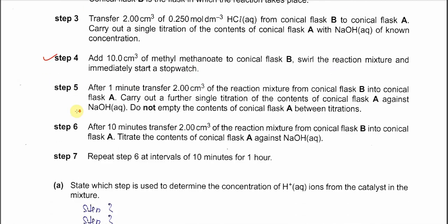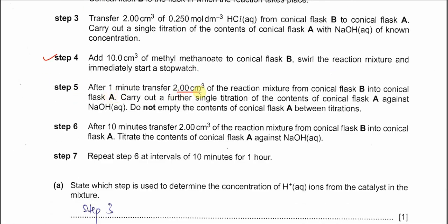Step 5: after 1 minute, transfer 2 cm³ of the reaction mixture from flask B into conical flask A. After that, titrate with sodium hydroxide. Once finished, do not empty conical flask B. After 10 minutes, add another 2 cm³ of the reaction mixture from flask B to flask A and titrate again with sodium hydroxide.